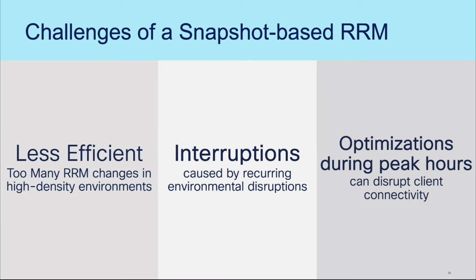They never knew the hole was there. Every time RRM made changes on its decision, clients got an impact. The client doesn't know what the new AP environment looks like because the AP changed the channel, so the client cannot use the prior scanning result. We should not make APs keep changing the channel — imagine what can happen in critical environments like healthcare or hospitals. Many customers do not want any RRM changes during the daytime, but they do it manually. We should avoid that and move on from those legacy manual ways.